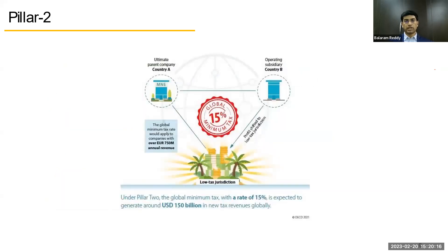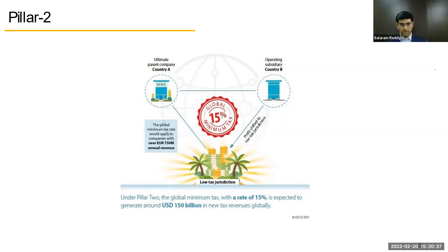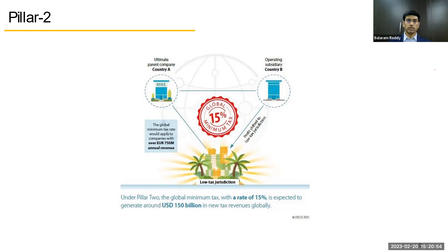Pillar Two targets MNEs not falling in the 20 billion euro category, but where the group-level turnover is 750 million euros or more. For any group with a turnover of 750 million euros or more, if the effective tax paid by the group across all companies together is less than 15%, it will be topped up to 15%, and the difference amount of tax will be distributed among the countries. This is the arrangement they came up with under Pillar Two.